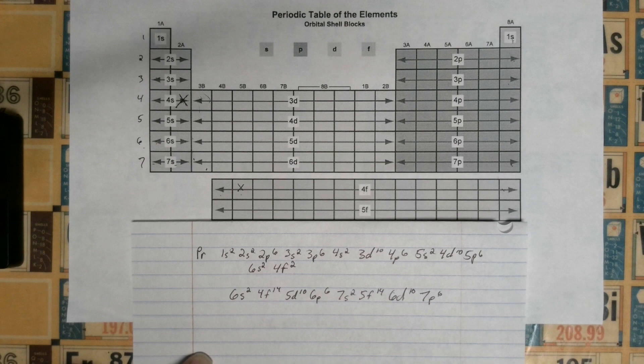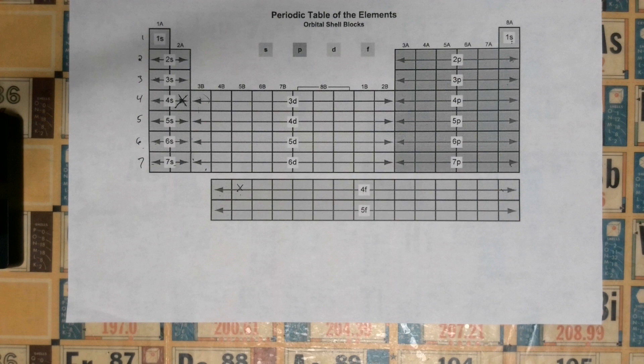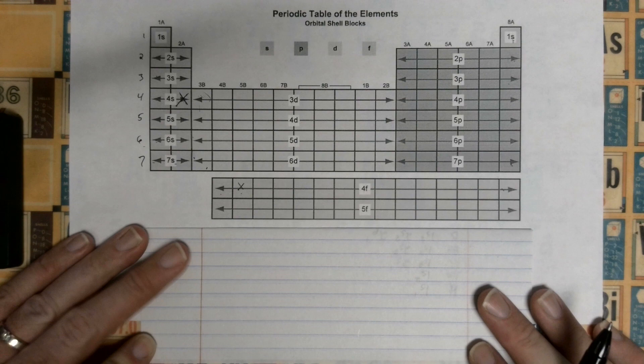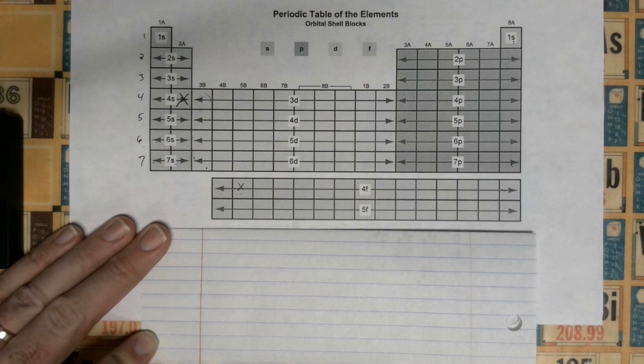Now hopefully you've noticed that there is kind of a pattern and it repeats itself over and over again. There's a way to minimize us having to write out everything. There's a way that we can abbreviate this, and it's called the abbreviated electron configuration. It makes things a lot easier. We don't have to write every single orbital out, and what we use are the noble gases, which is group 18.